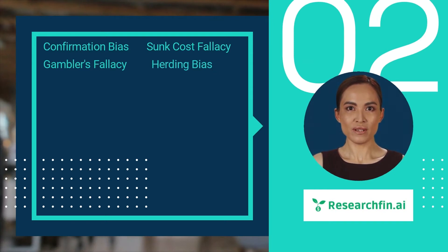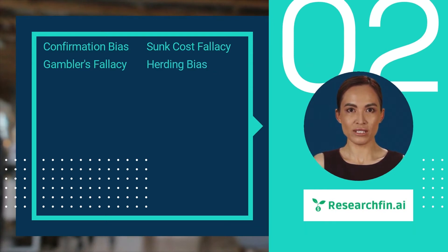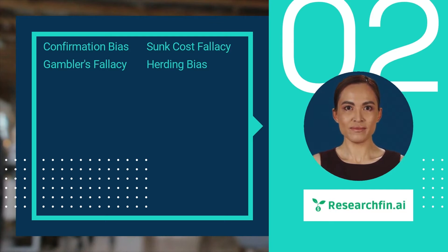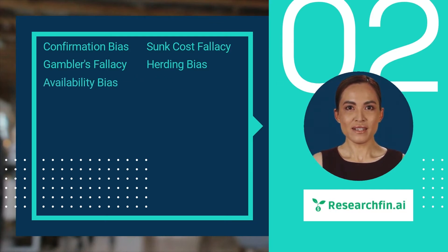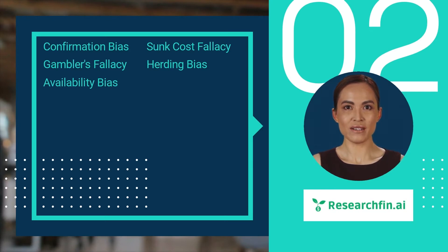Herding bias is the tendency to follow the actions of others, even if they are not rational. Availability bias is the tendency to place more weight on information that is readily available to us.